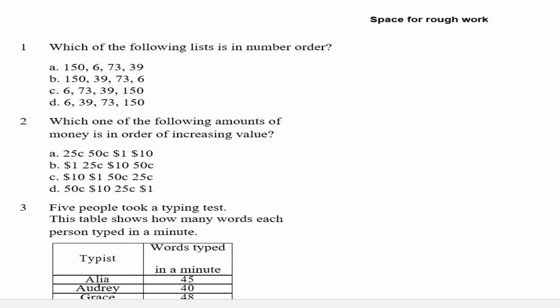Just like the Stage 2 City & Guilds math past paper, Stage 1 does not allow for the use of a calculator. But the cool thing here, the questions are pretty easy — a lot of them don't even require any working. It just requires a little reasoning, some common sense reasoning, and you're good.